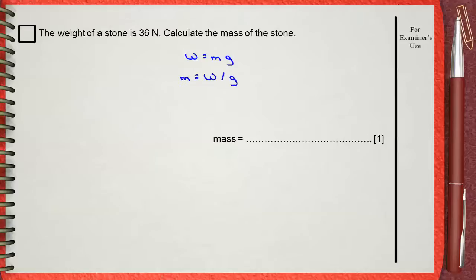You can modify this equation to be M equals W over G, which is 36 Newtons divided by 10. This means that the mass will be 3.6 kilograms.